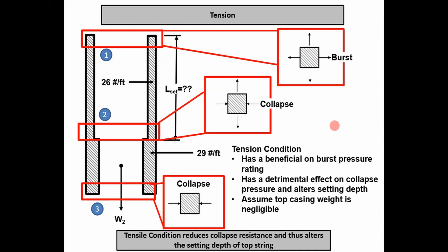Another loading condition we consider is tension, which is caused by the weight of the string below the point we're calculating loads. For the burst pressure condition, if you take an element at the top, the burst pressure is wanting to produce lateral strain outwards. The tension effect is actually trying to prevent lateral strain outwards. So in essence, tension has a beneficial effect on the burst pressure rating — it actually increases the burst pressure rating of your casing.